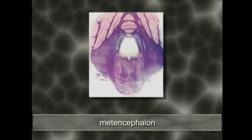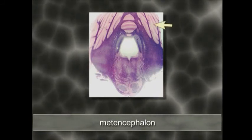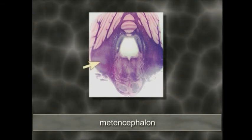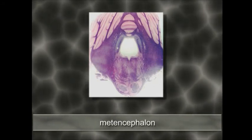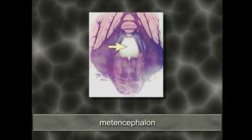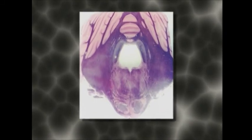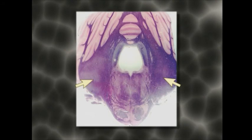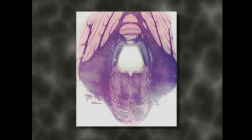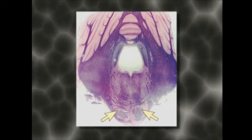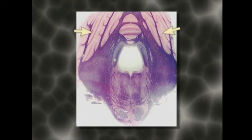A section through the metencephalon shows pink nuclei and dark axon areas again, with the ventricular system, the cerebellum above, and the pons below. Now you can see why the pons is called the bridge: axons from pons neurons project to the cerebellum to inform it of movements initiated by the cortex. The pons receives motor information from the cortex, then neurons here send their axons into the cerebellum so it knows what the motor cortex wants to do — making the pons the bridge between the cerebellum and the brain.